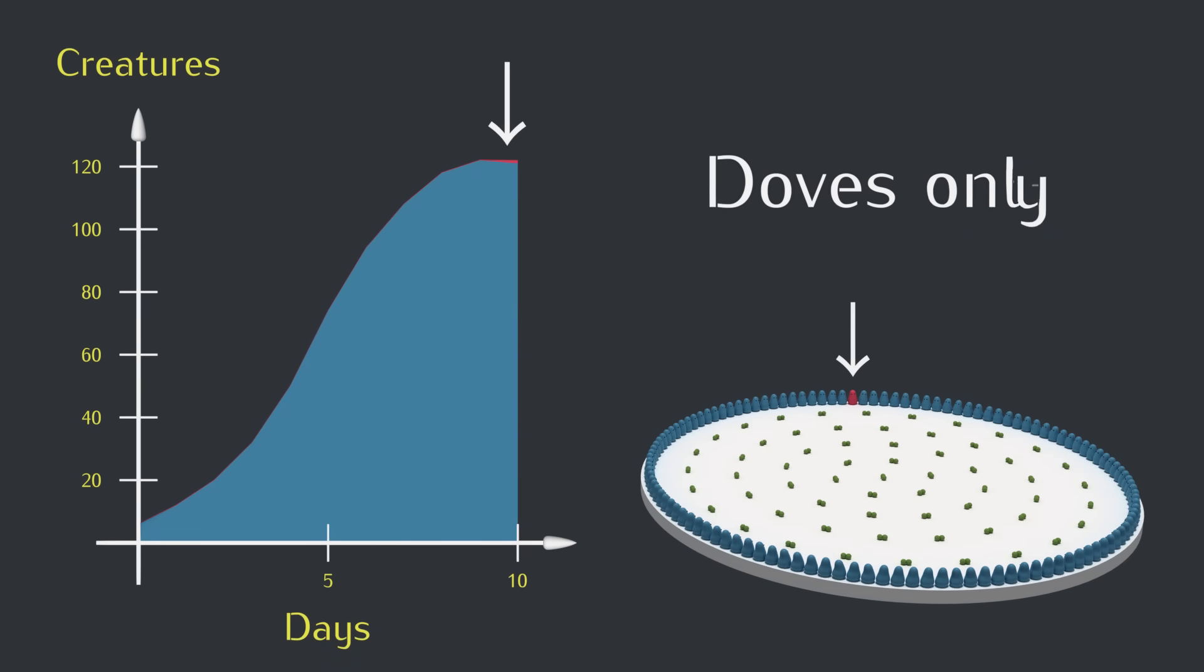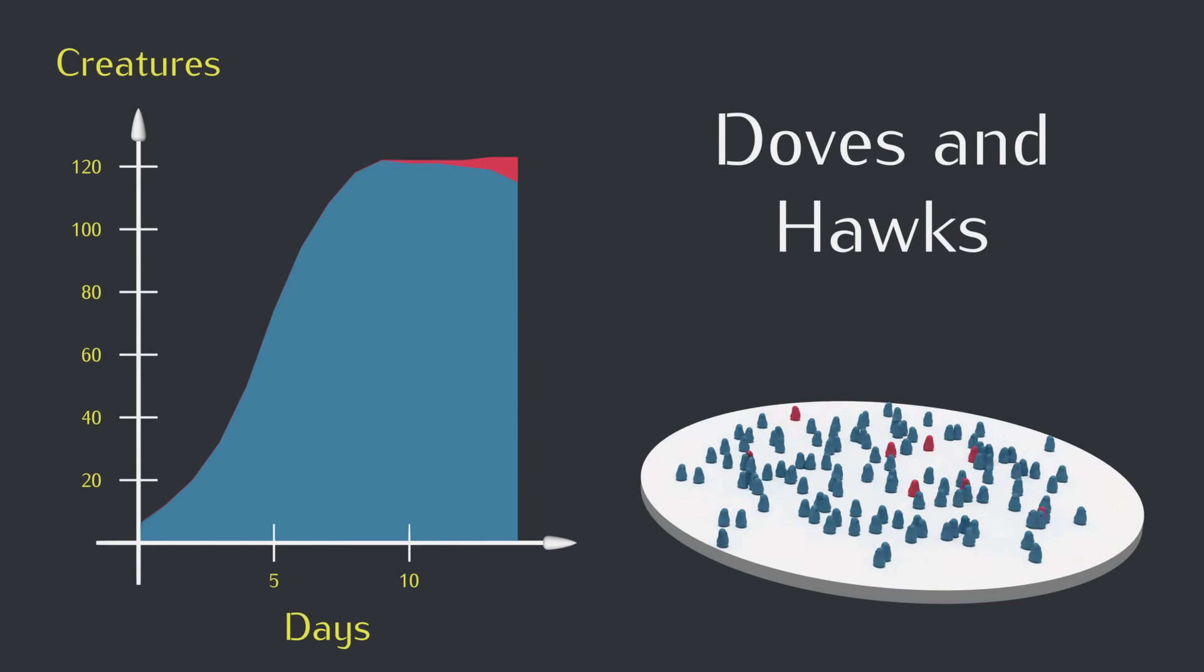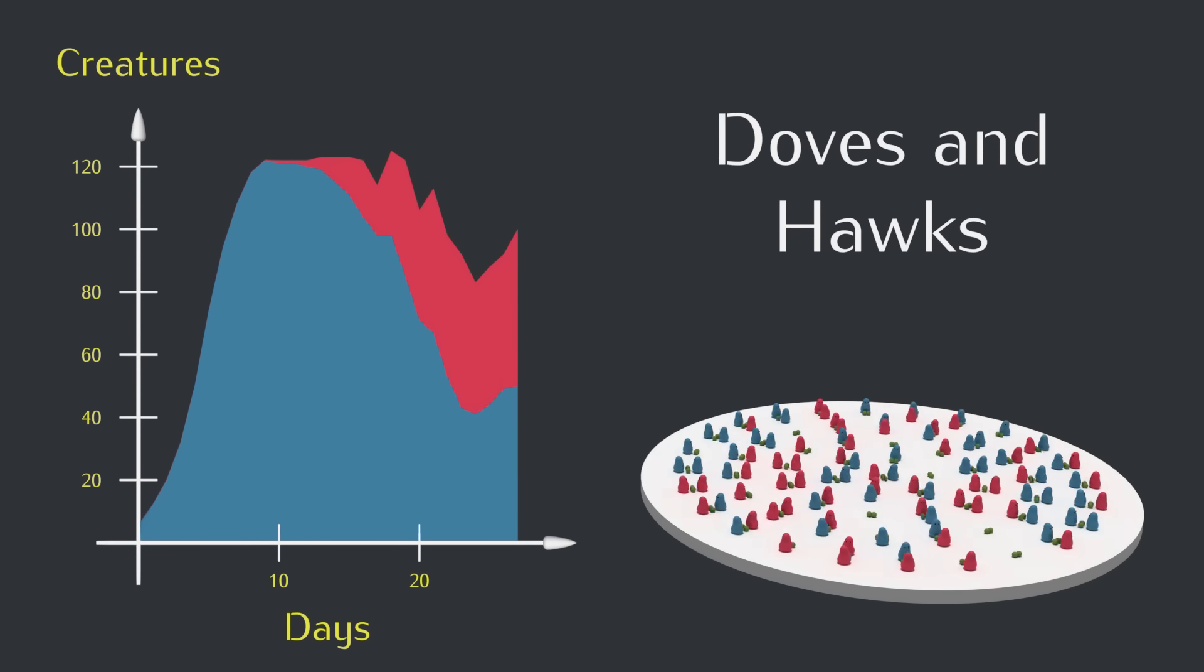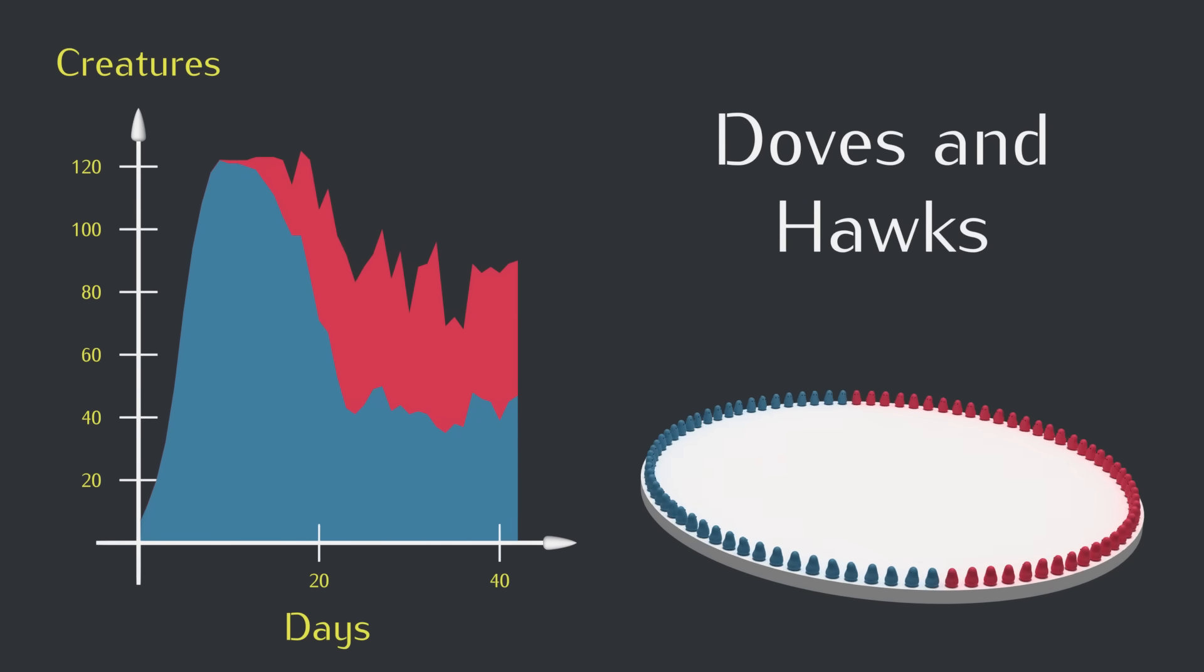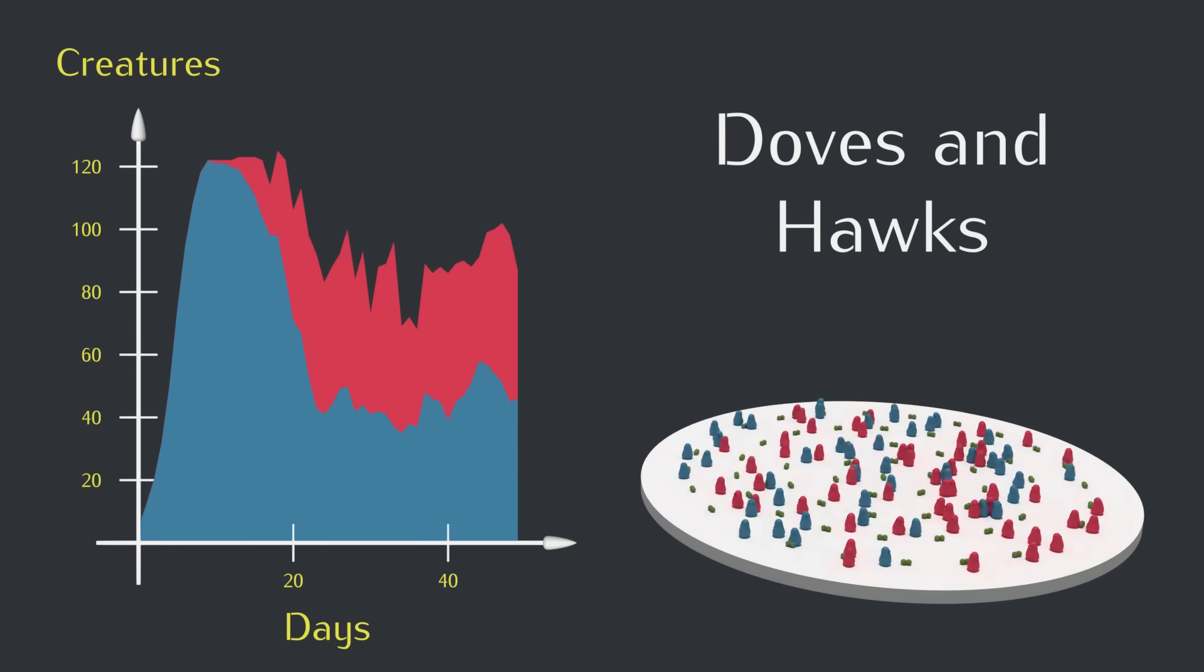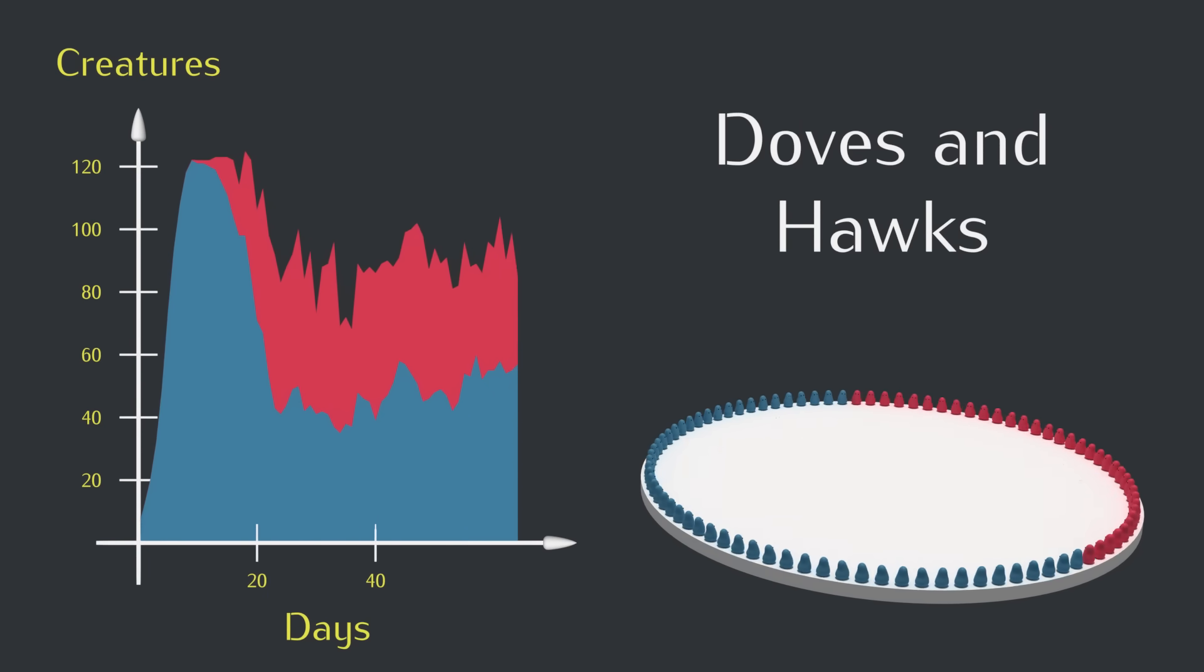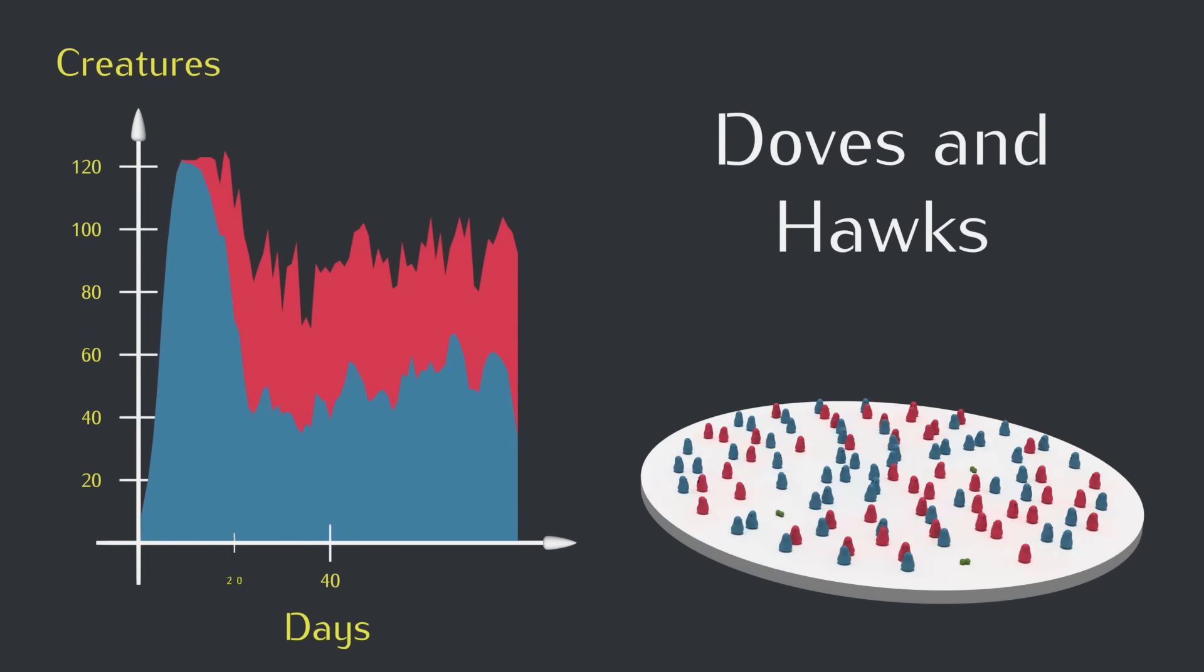So now let's try adding a hawk creature to our simulation and see what happens. Now is a good time to pause and predict what you think will happen. Alright, it looks like we have a mixture that fluctuates roughly around half and half.